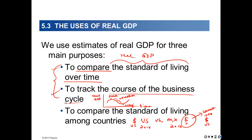The first point says: to compare the standard of living over time. So that's tracking how Americans are doing over time — comparing GDP this year to GDP, let's say, ten years ago. We need to use real GDP for that type of comparison. Number two says: to track the course of the business cycle. This too involves an inter-temporal comparison, a comparison across time.